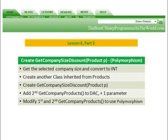In part three we're going to implement polymorphism. Polymorphism is basically when the caller of the object is unaware of the specific object type. We're going to create a getCompanySizeDiscount method that accepts a product class, but when we implement it we'll actually be sending it a different class, thereby implementing polymorphism. We'll get the selected company size and convert to int, create another class inherited from products, create getCompanySizeDiscount passing it the product class, and add a second getCompanyProducts method to the data access component with one additional parameter.